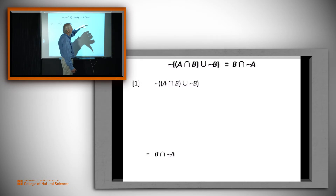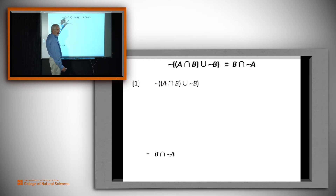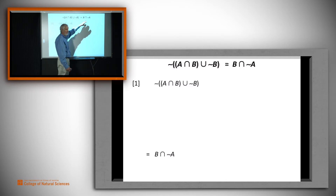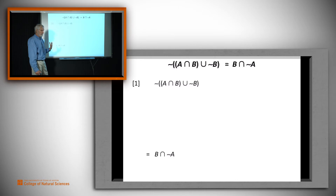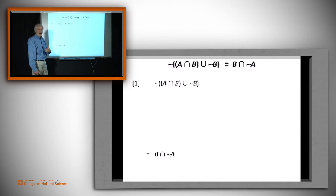Then we would suppose an element is in the right hand side, use set theoretic definitions to translate into logic, do a bunch of logic, and show that it is in the left hand side. Once we've shown both directions, the two sets are equal. For this one, that takes approximately 40 lines to do. We're going to show a much shorter version of the proof using set identities, which are theorems already proven by the technique just described.